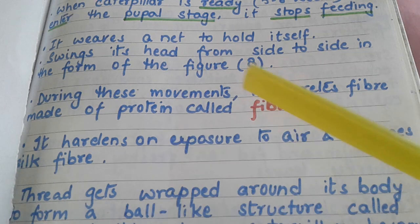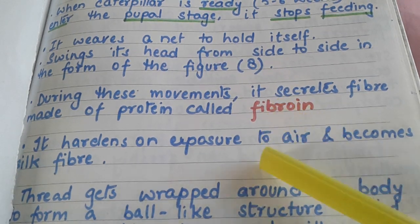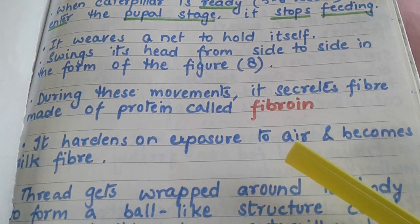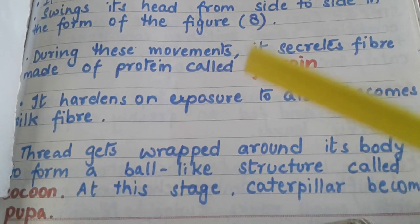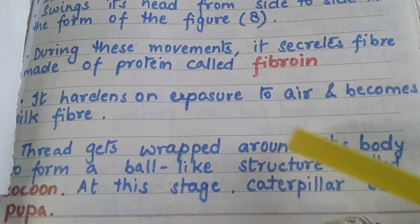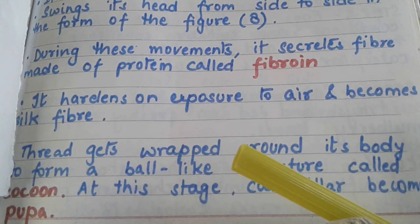This protein, fibroin, hardens on exposure to air and at this stage it becomes silk fiber. The thread gets wrapped around the body and forms an oval structure known as a cocoon. As you can see in this diagram, the thread is getting wrapped around its body forming that oval cocoon structure.